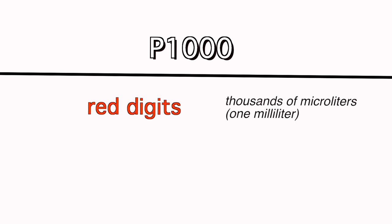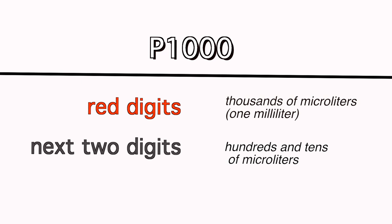For the P1000, the red digits refer to thousands of microliters, and this number should never exceed one since the maximum volume is 1,000 microliters, which is the same as one milliliter. The next two digits indicate hundreds and tens of microliters, while the red tick marks indicate single microliters.